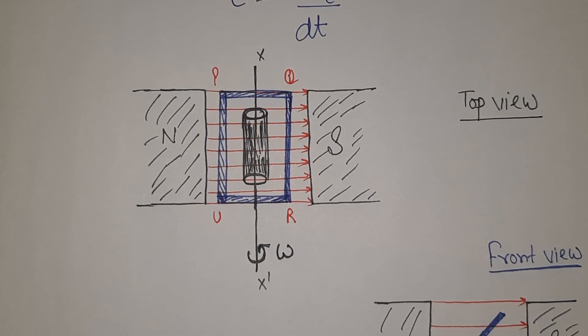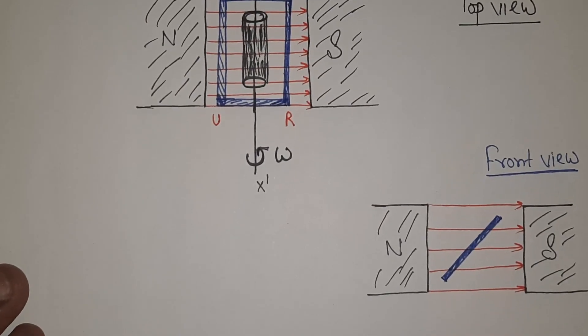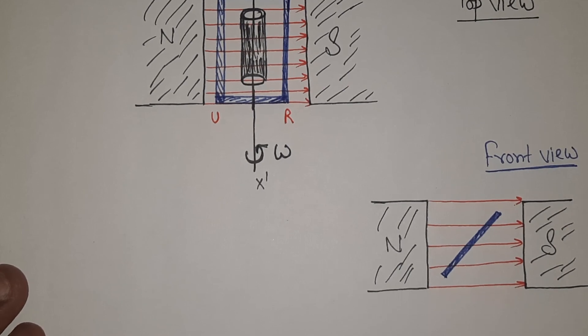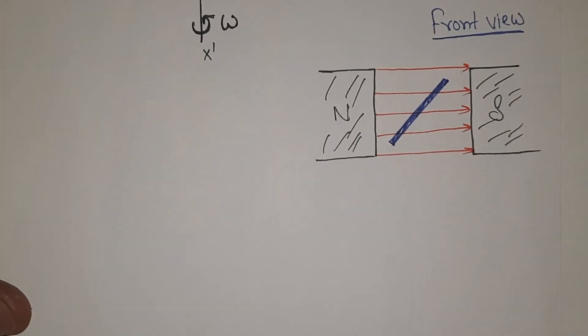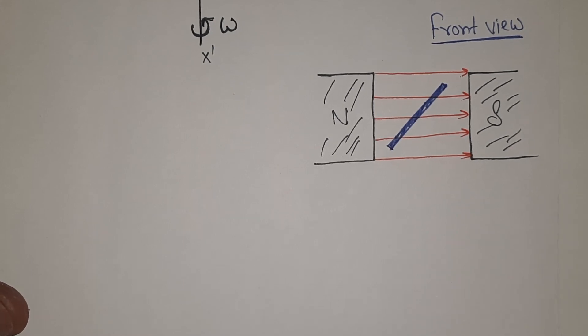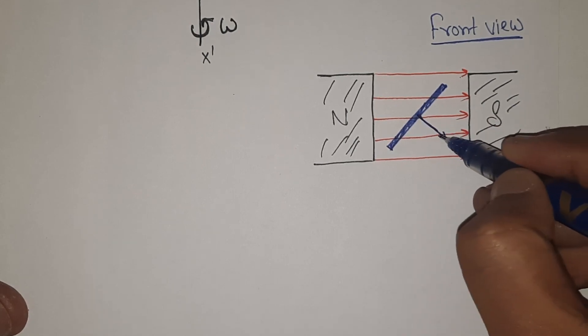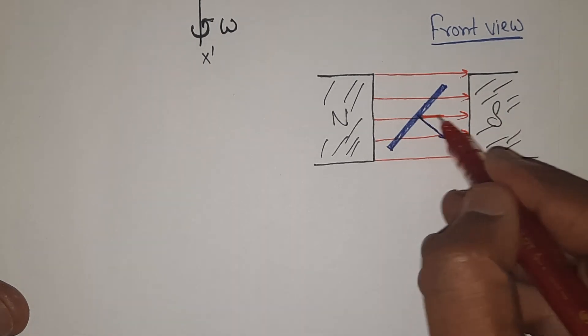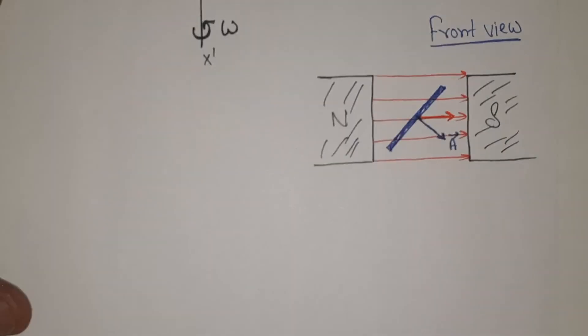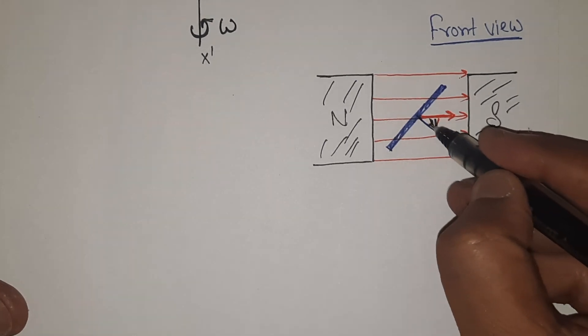Now see how much flux is associated at any time and how that flux is changing and how that change in flux is leading to induction of EMF in the coil, induction of AC in the coil. Now as this coil will be rotated, concentrate on this diagram, the front view. The area vector is always normal, so that will be something like this.